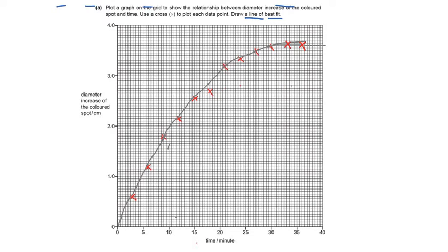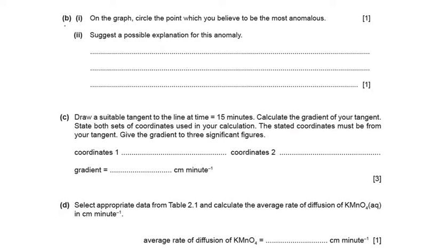If you draw the curve smoothly through the points you will get two marks, as this is a two-mark graph plot. You can see there is one anomalous result at around 18 minutes — this point lies outside the curve and is considered an anomaly. The next part of the question says to circle the point you believe to be most anomalous, which we have done.